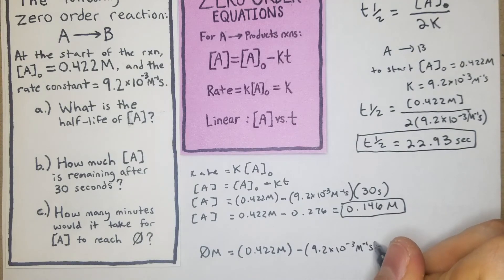minus 9.2 × 10⁻³ M⁻¹s⁻¹ times t. So this time we're solving for time.